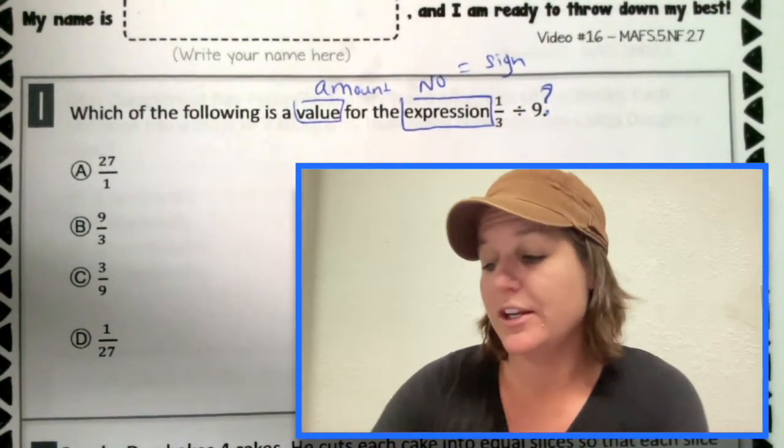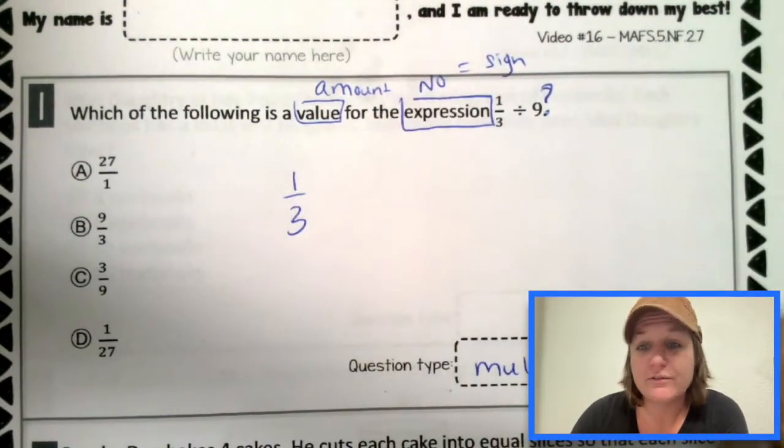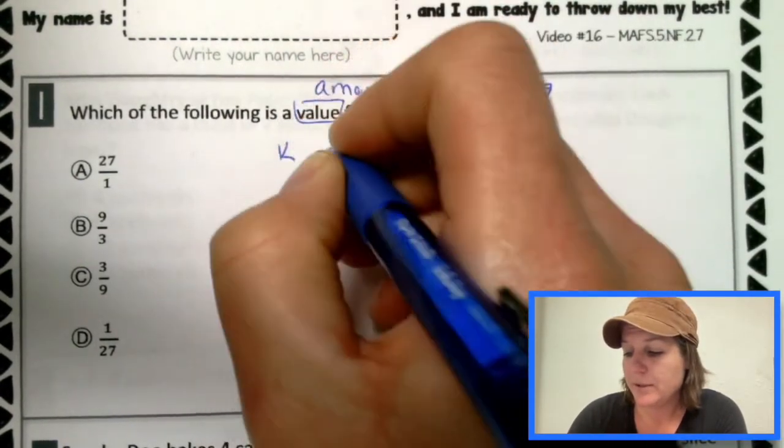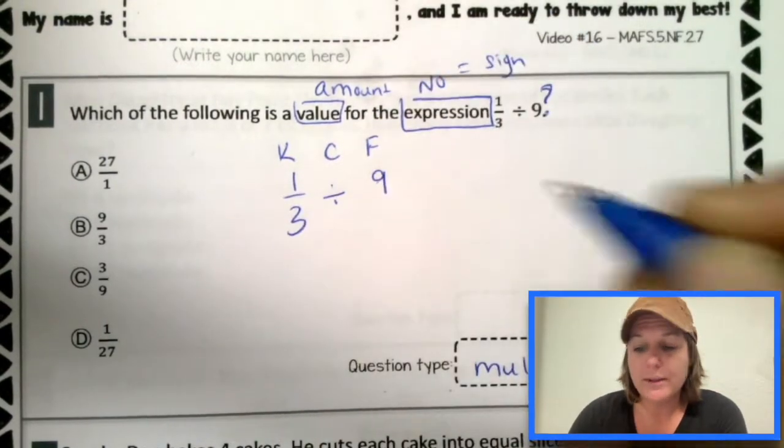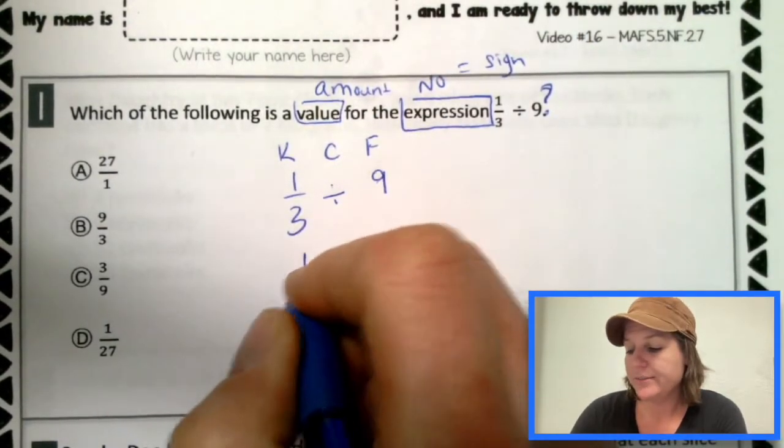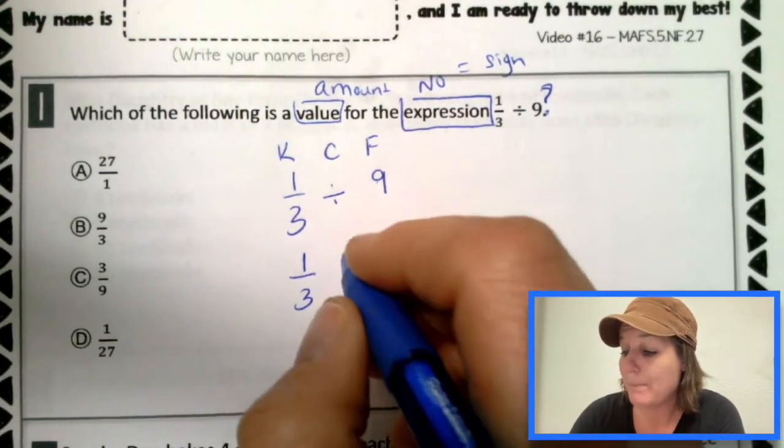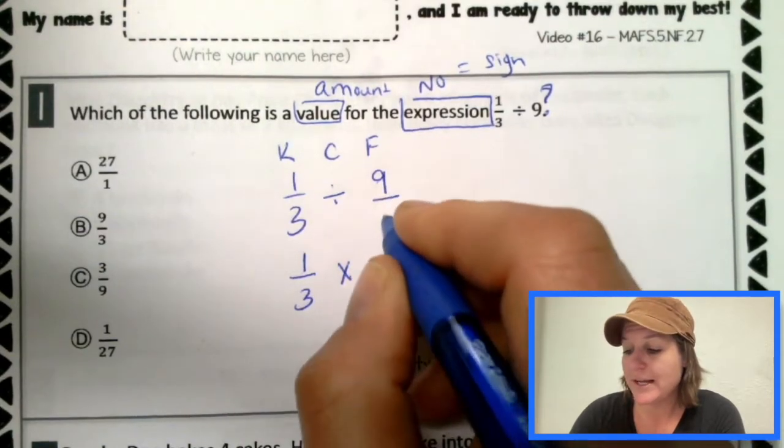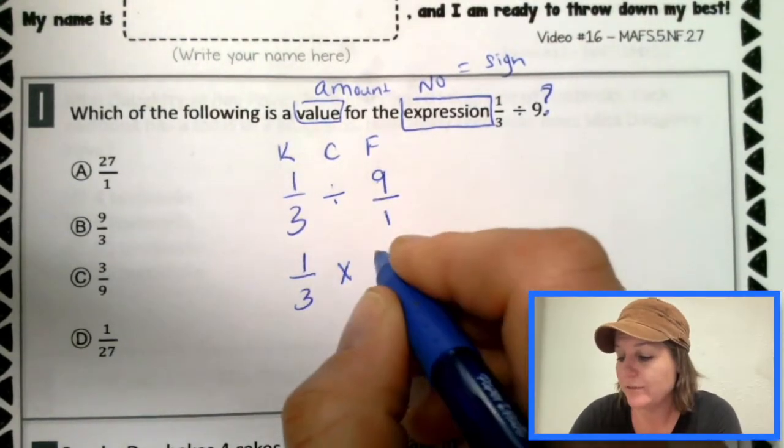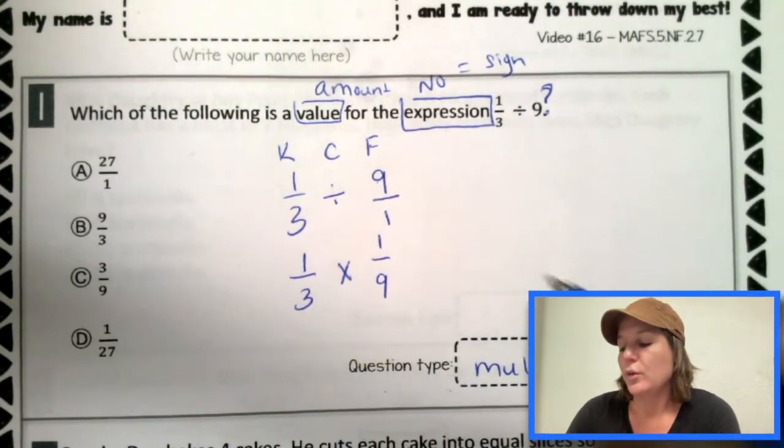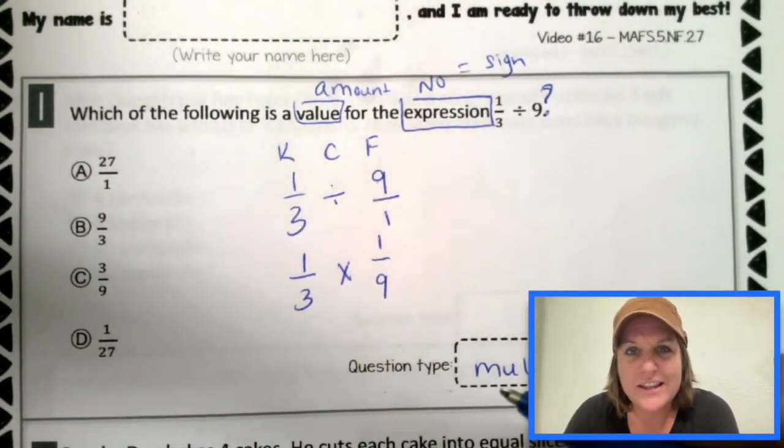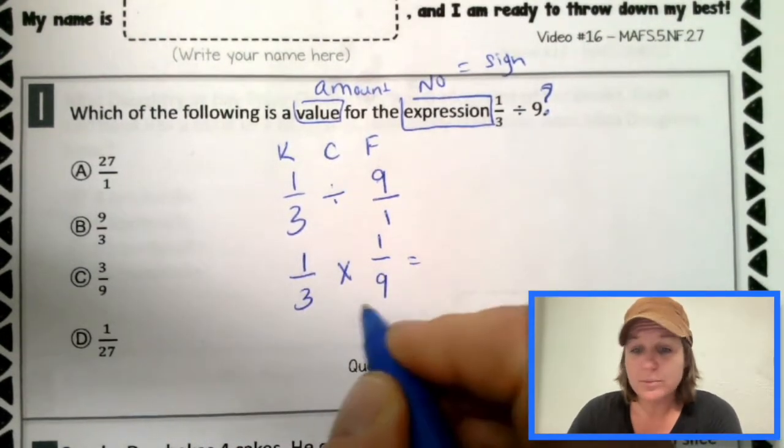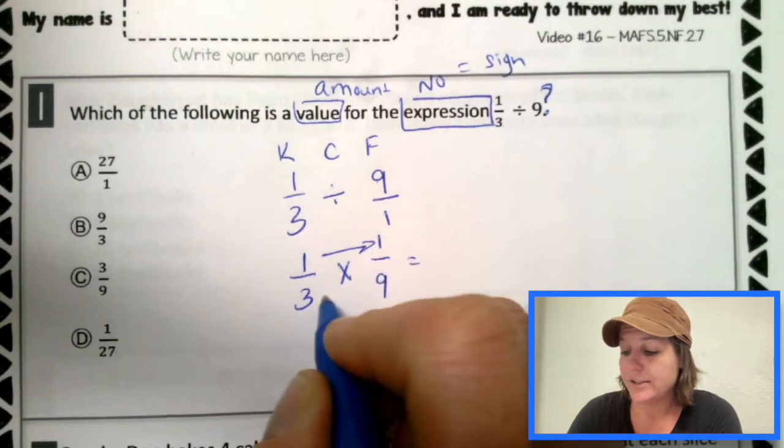And for division, we keep, change, and flip. So keep, change, flip. That means we're going to keep the first fraction. We're going to change the sign to multiplication. And we're going to flip nine. So nine used to be nine over one. Technically, we're going to flip it around to be a reciprocal, which is one ninth. Now that we're multiplying, we just fly across and multiply.